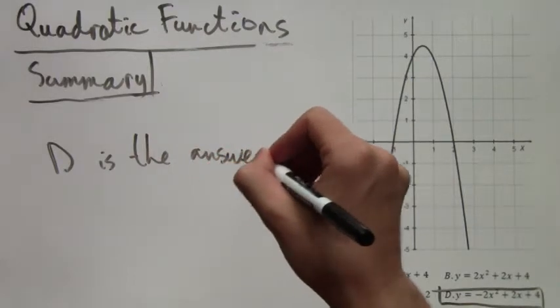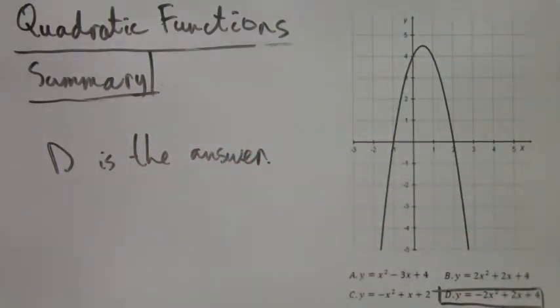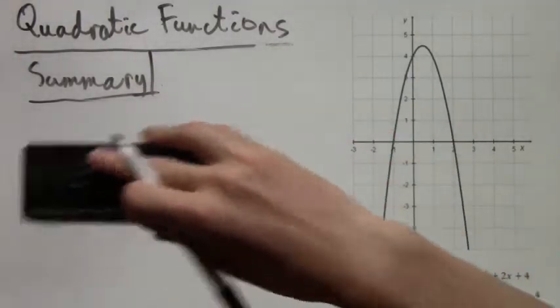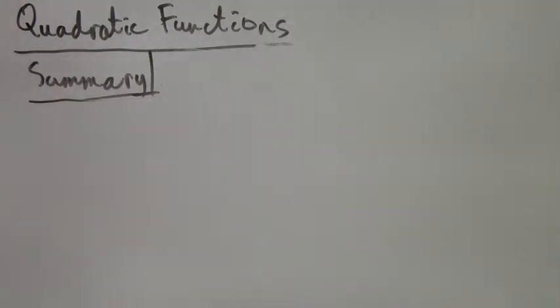So the strategy here is to eliminate a few answers and then once you only have a few left there are ways of figuring out which one of those few has to be the correct answer.